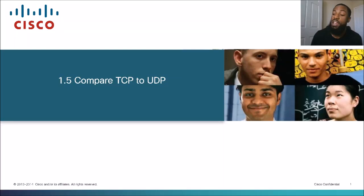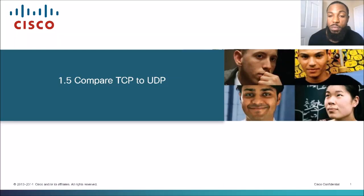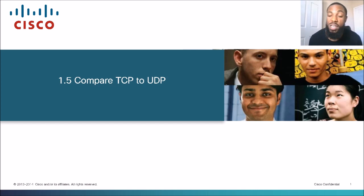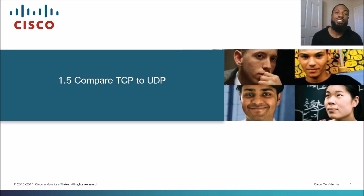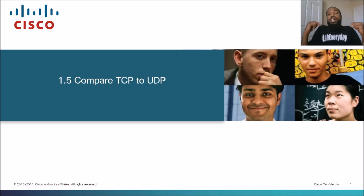You are now tuned in to the network, the YouTube channel that takes complex networking topics and dumbs it down to simpler language. Today's topic is compare TCP to UDP. This is a topic in the CCNA exam, exam code 200-301. Let's take a look at the exam blueprint to see where we came from and where we're headed. Hashtag lab every day.